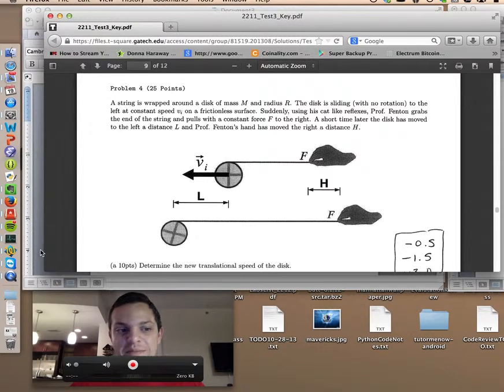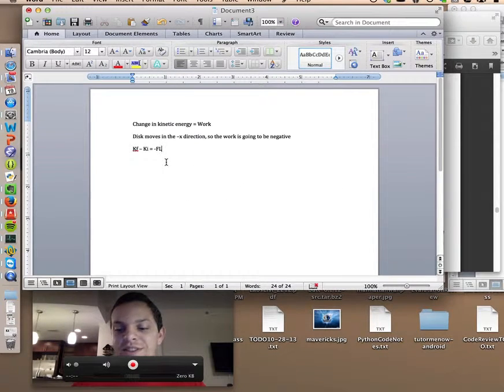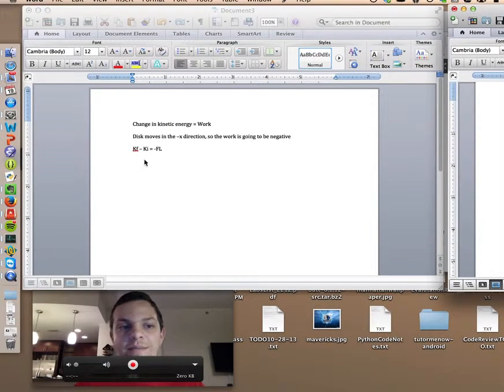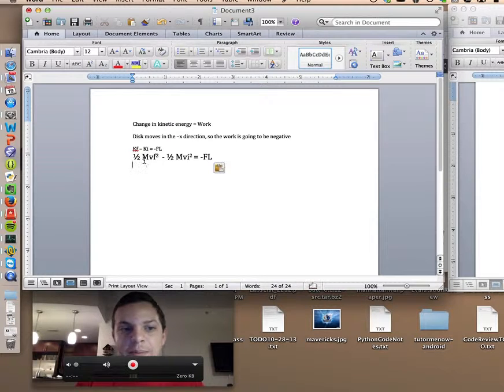Now, as we continue working with this, we can start putting in, substituting in equations for kinetic energy, which in this case is ½mv². So we're going to have ½m vf² minus ½m vi² equals negative fl. Let's go ahead and put that into our document. ½m vf² minus ½m vi² is negative fl.